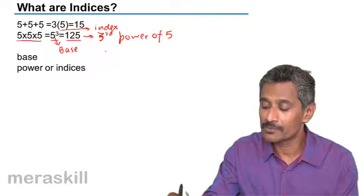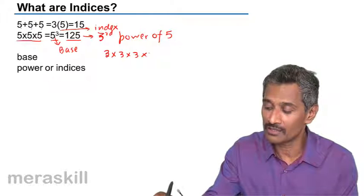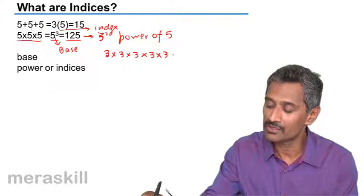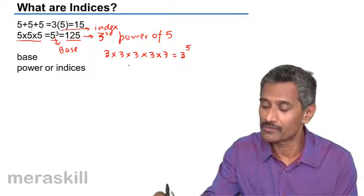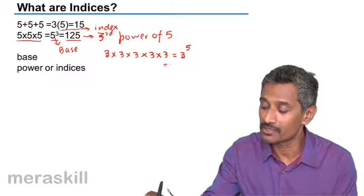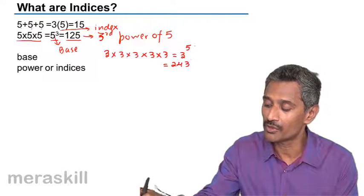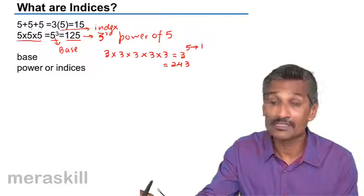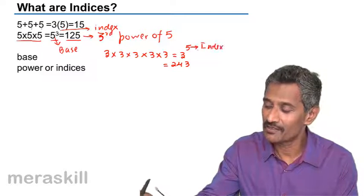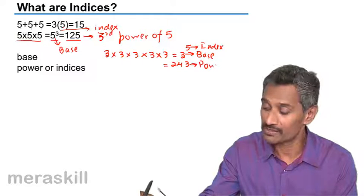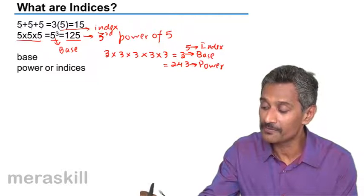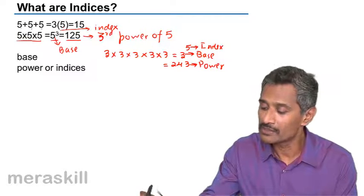Another example: suppose you have 3 into 3 into 3 into 3 into 3. So this is 3 raised to 5, which is going to be 243. Here, 5 is the index, 3 is the base, and 243 is the power. So we say that 243 is the fifth power of 3, which is just the reverse.